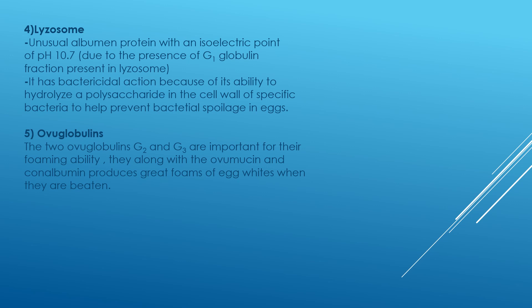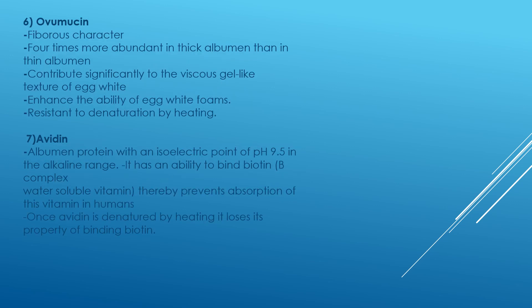Oval globulins: there are two oval globulins, G2 and G3, which are important for their foaming ability. They, along with ovomucin and conalbumin, produce great foam of egg whites when beaten together. Ovomucin is a fibrous character protein which is four times more abundant in thick albumin than in thin albumin. It contributes significantly to the viscous, gel-like texture of egg white.